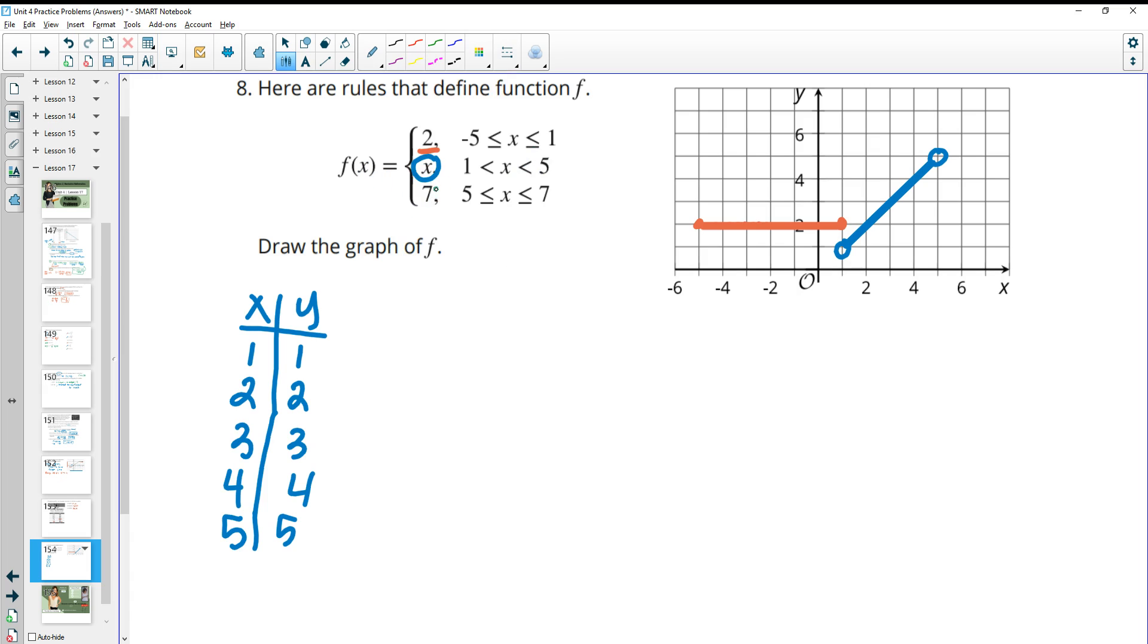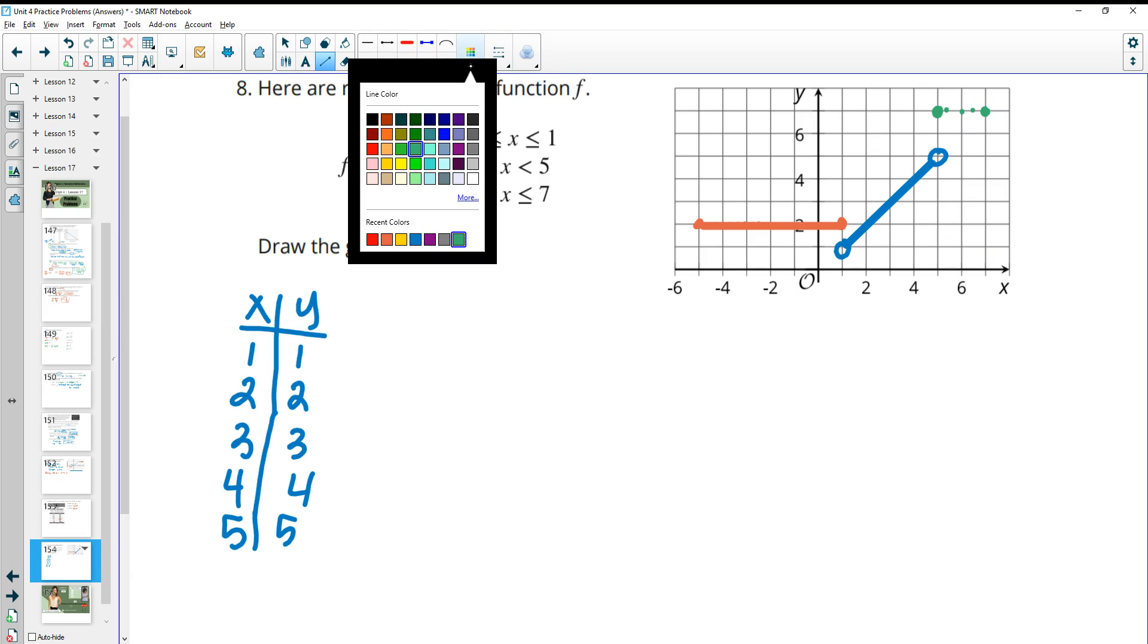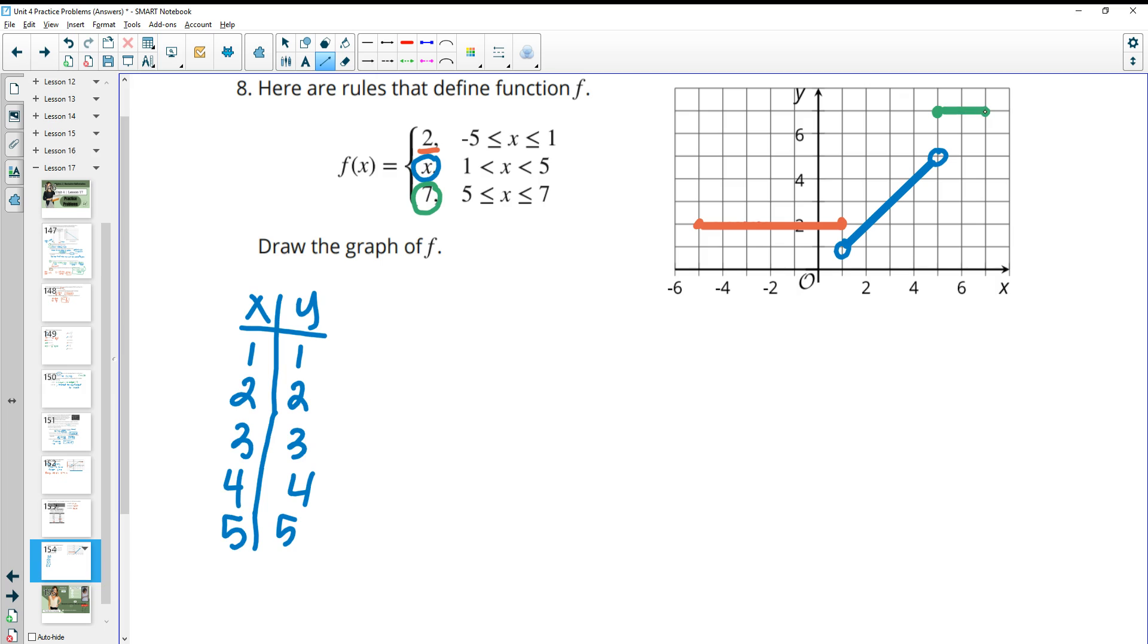Then the graph is 7 when x is equal to 5. So at x equals 5, it is 7. So that's a closed circle. And it's 7 all the way until x equals 7. So it's 7 between, like at 5.2, it's 7. At 6, it's 7. At 6.5, it's 7. So every number between 5 and 7, the output is 7.